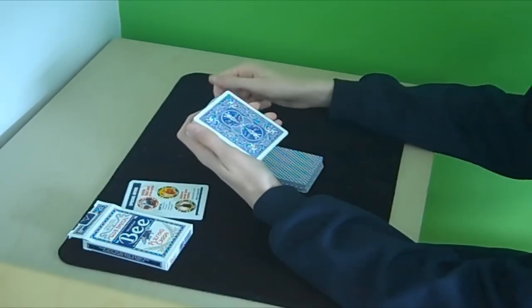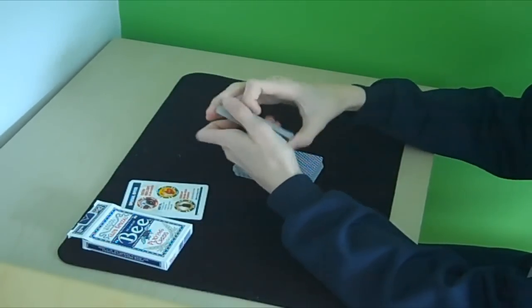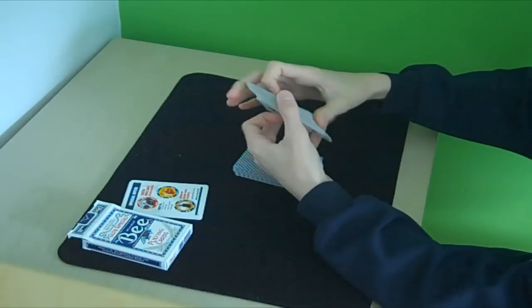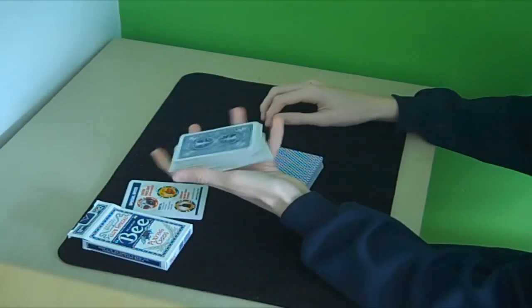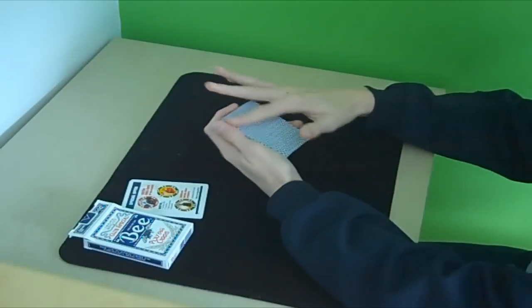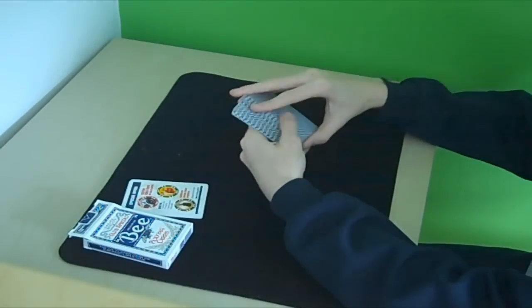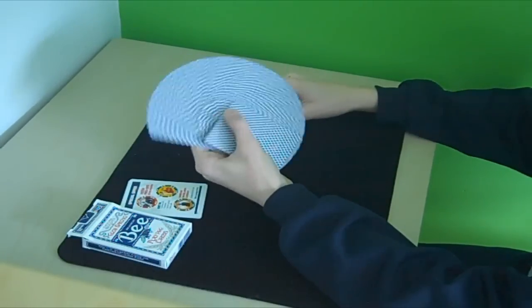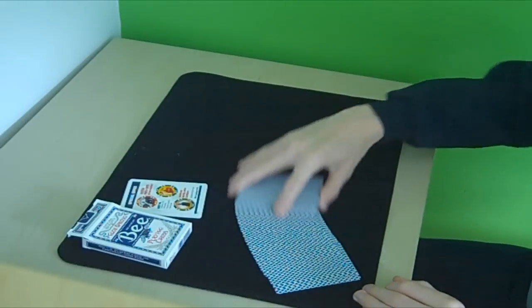And this kind of breaks up the back design in spreads and fans and things like that. But of course as you can see with the Bee deck it's not like that. The back design covers the whole of the back which does make fans and spreads look a little bit different.